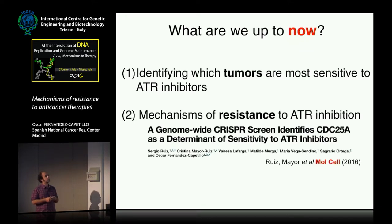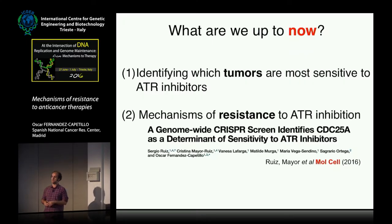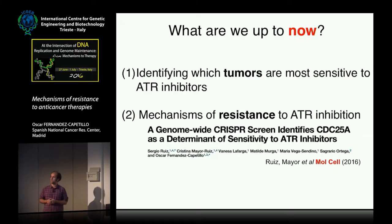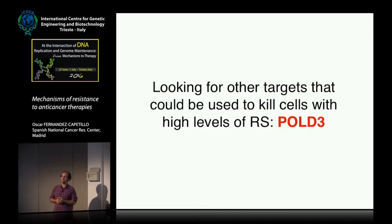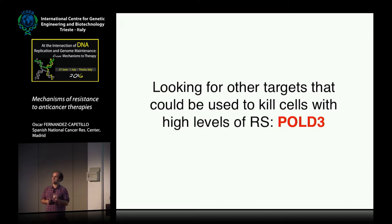We've also been doing genome-wide CRISPR screenings to identify mutations that could make cells resistant to the reagent, trying to anticipate how tumors could escape from these chemicals. But this is already published. So what I'm going to talk about is: ATR is fine — what about another protein, another target? Is there any other protein we can target that would be particularly toxic for cells that have replication stress?